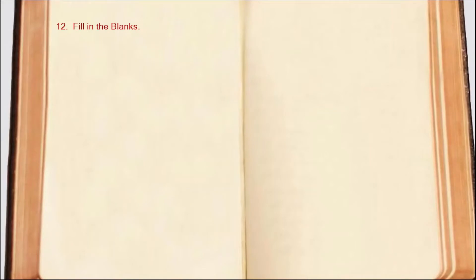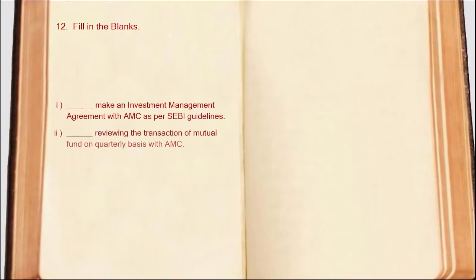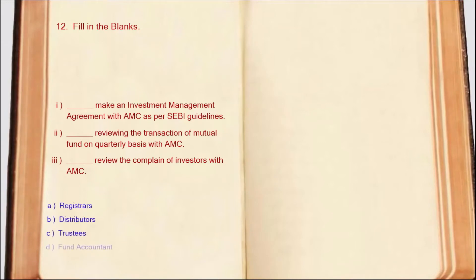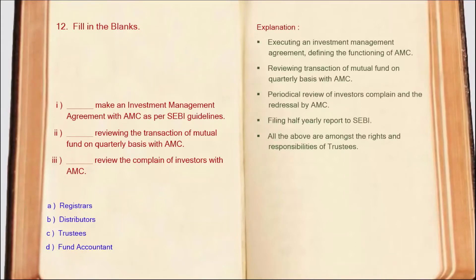Next — fill in the blanks. Preparing an investment management agreement for AMC clearly mentioning AMC's functions; reviewing mutual fund transactions on a quarterly basis; periodic review of investors' complaints; and filing half-yearly reports with SEBI — all these are the rights and responsibilities of trustees. So the correct answer is Option C: Trustees.